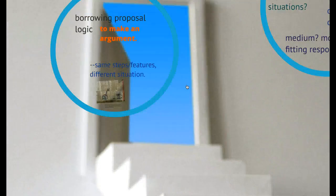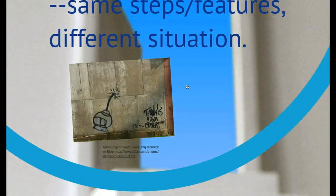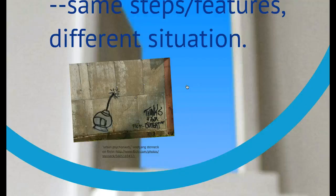Sometimes people pick up the logical form of the proposal using the features that we've just identified in order to make a particular kind of argument—the kind of argument that identifies a problem and proposes a solution to the problem. In this case, the proposal is not a specific reply to a specific call; rather, it is taking up that kind of logic in order to make that type of argument.